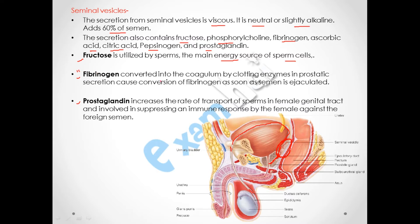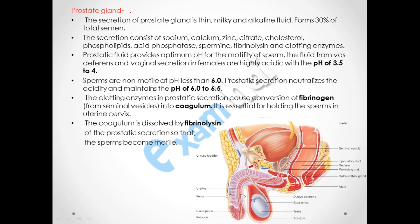Fibrinogen is converted into coagulum by the clotting enzyme in prostatic secretion as soon as semen is ejaculated — this point will be discussed further under the prostate gland. Prostaglandin increases the rate of transport of sperm in the female genital tract and suppresses the immune response of the female against the foreign semen.